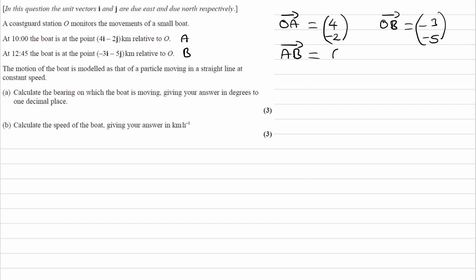A to B is the same thing as A to O plus O to B. A to O is the negative of O to A, so it'll be (-4, 2) plus O to B, which is (-3, -5). This gives us (-7, -3).